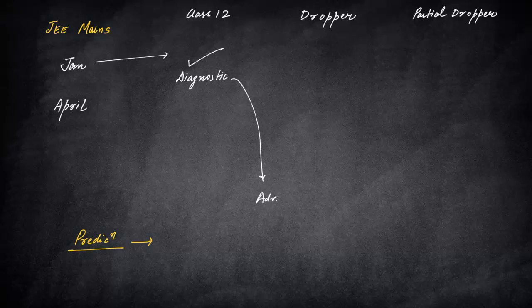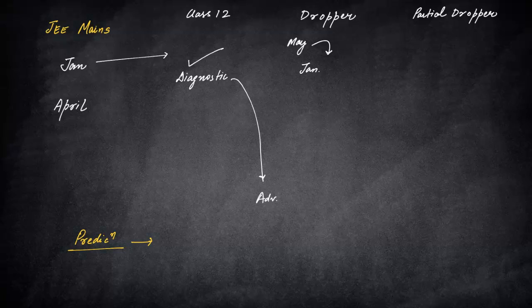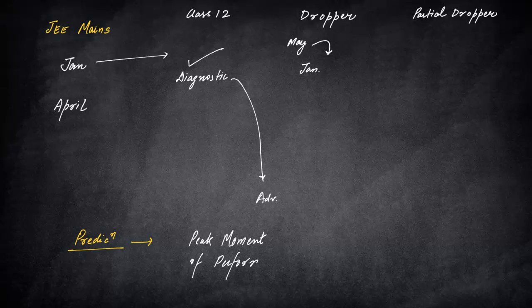But for droppers, I've seen a lot of droppers who start, let's say droppers who start in the month of May. They would love to take the exam in January. Now understand why I'm saying all this. So I have a huge theory of saying that there is a peak moment of performance, peak moment of performance. And some of you might well agree, especially the droppers.